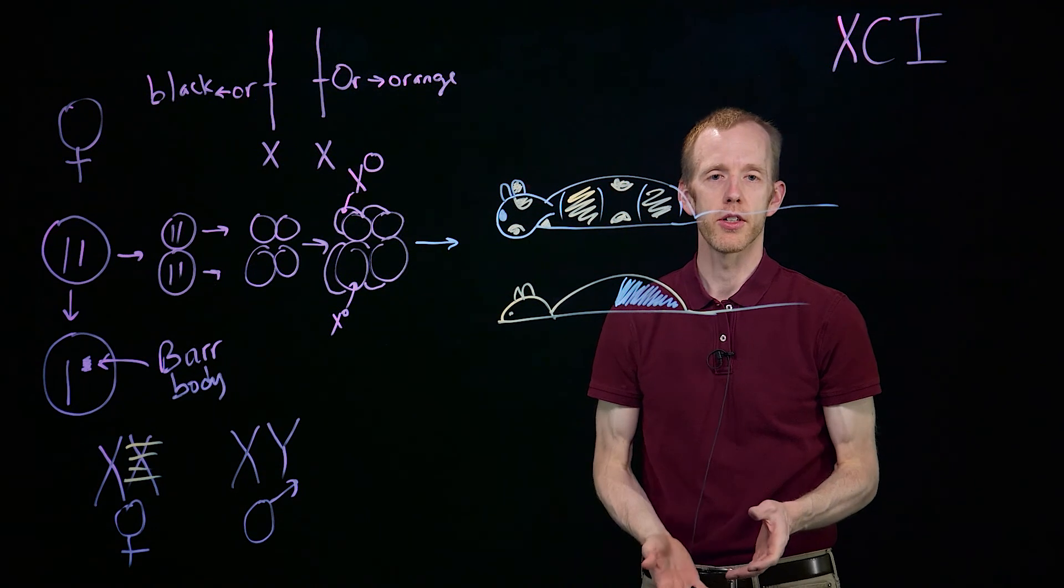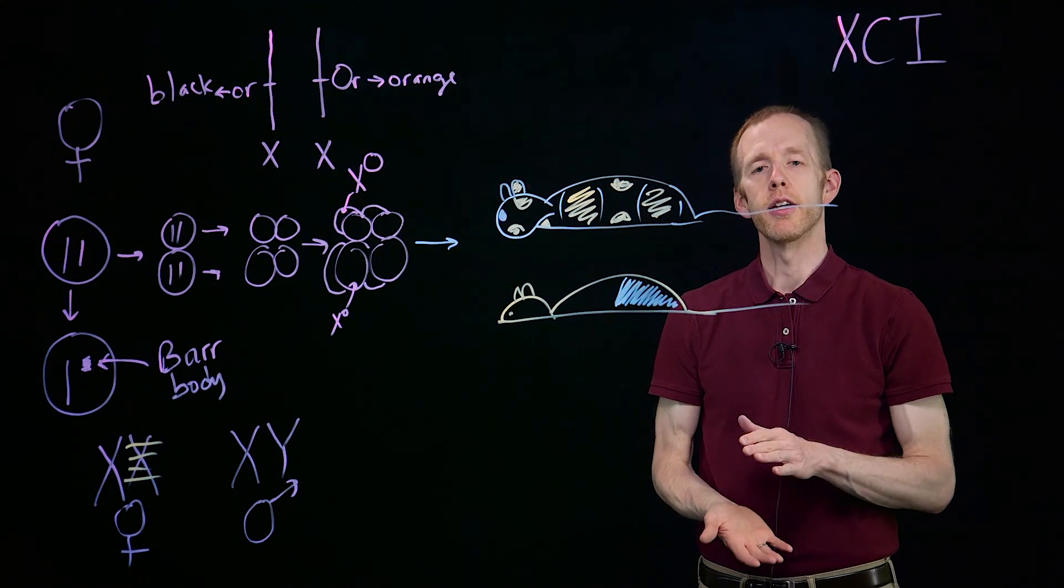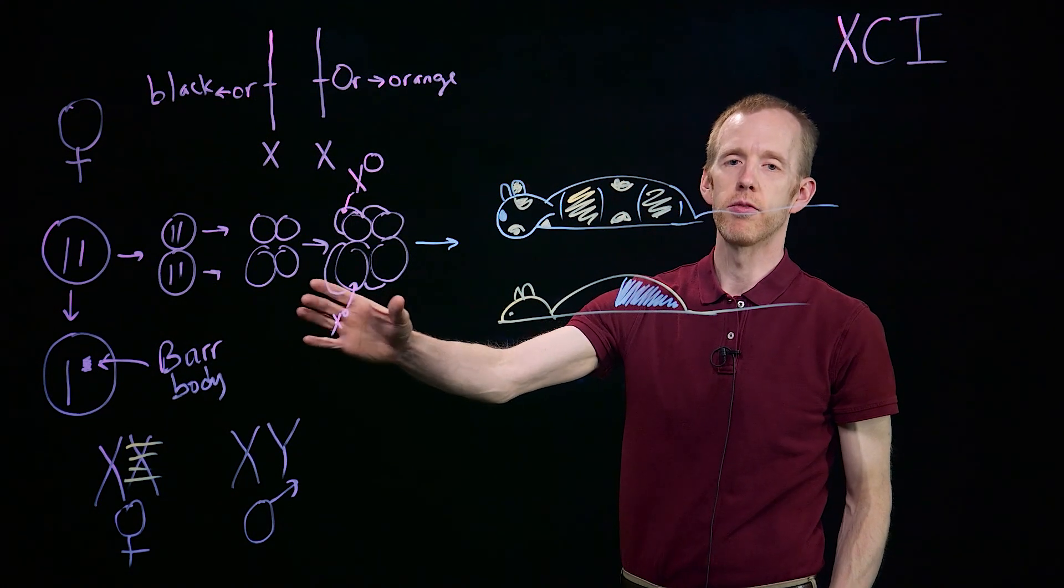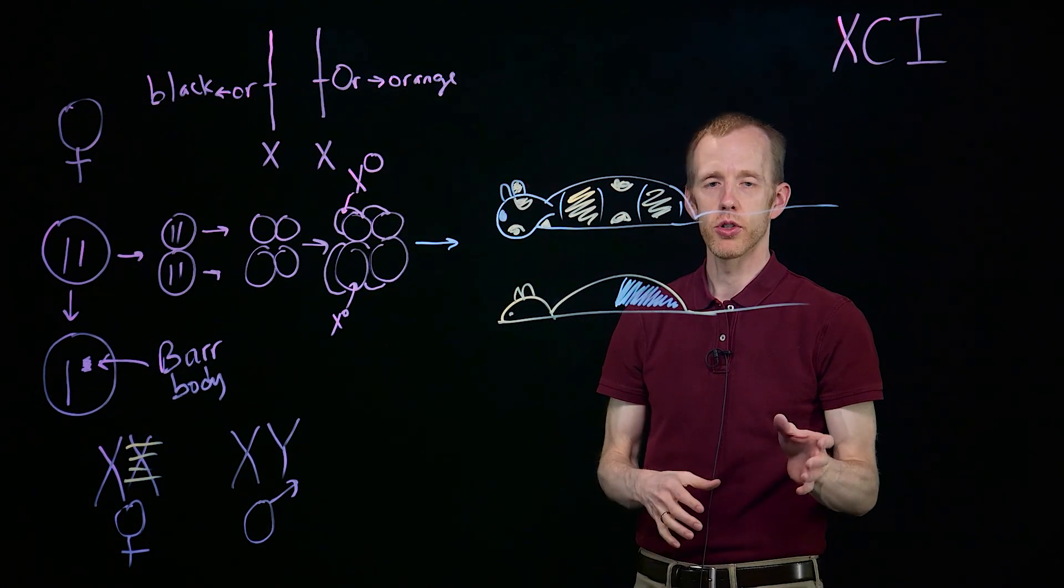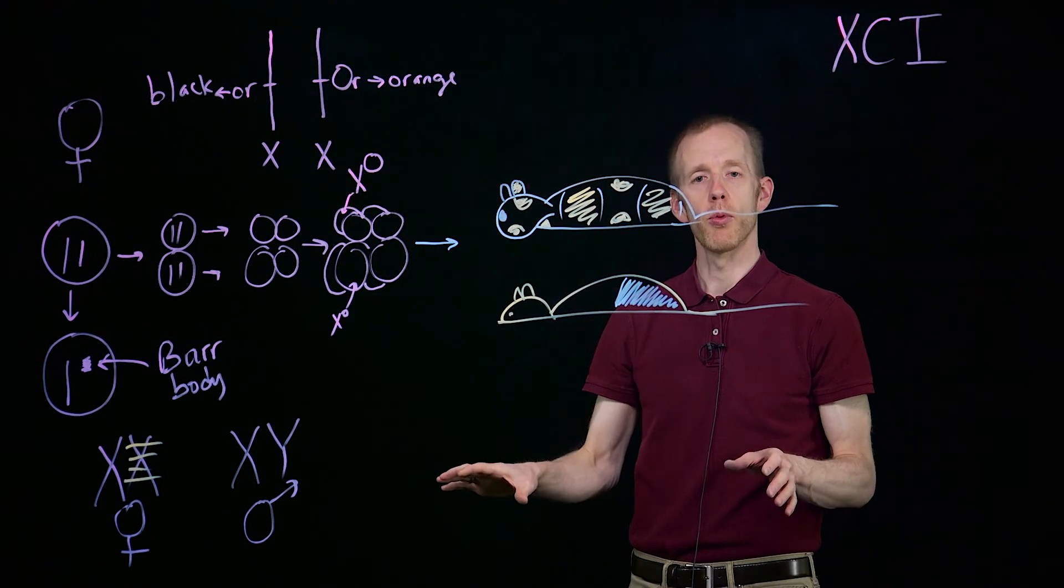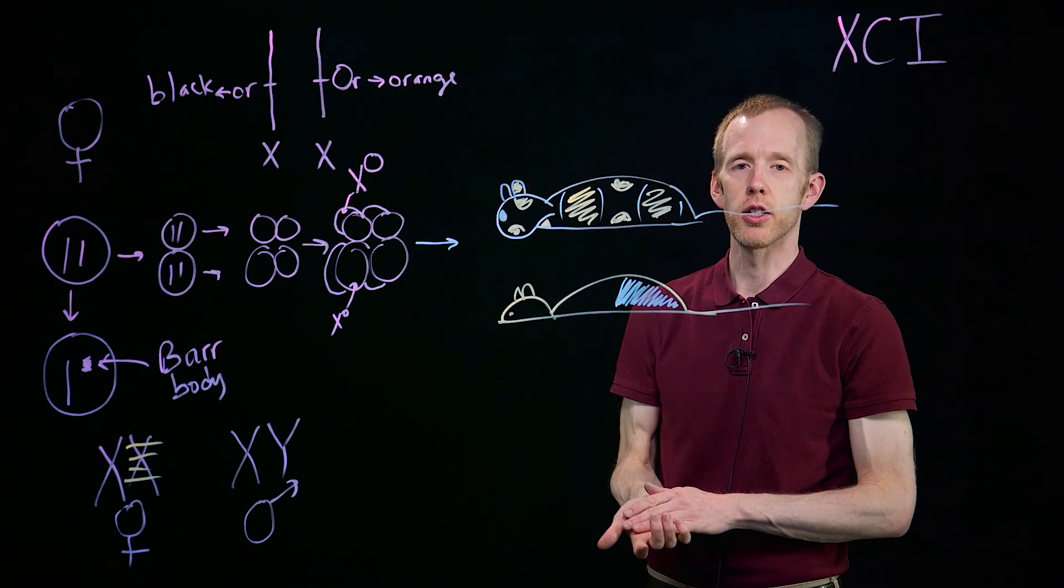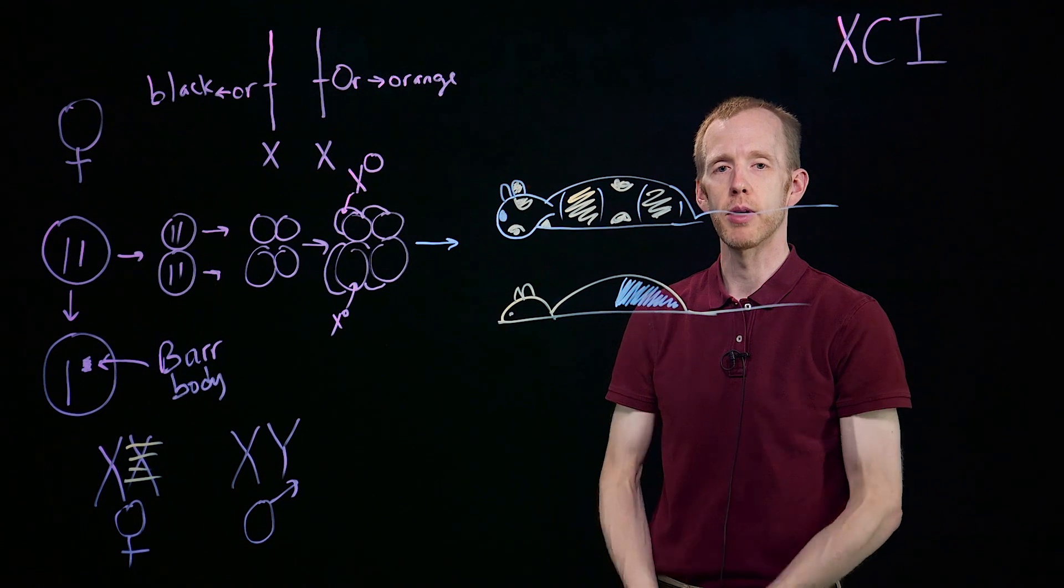So that's the process of X chromosome inactivation. It's random inactivation at a point during early development in female mammals that turns off either one X chromosome or the other, and that's a process that's dependent on heterochromatinization, condensing the DNA so that it can't be transcribed.